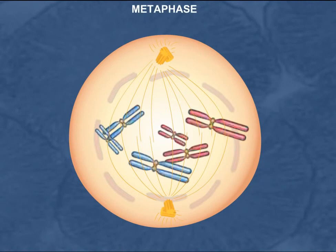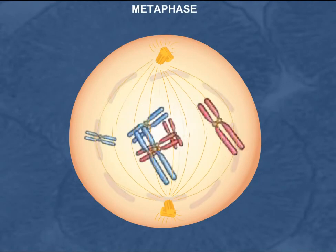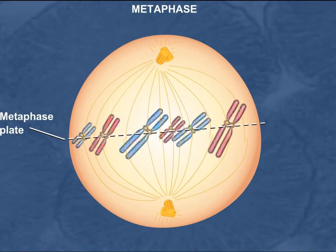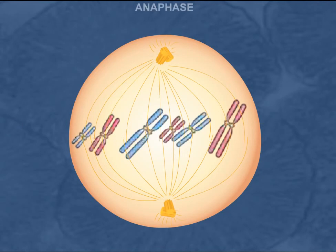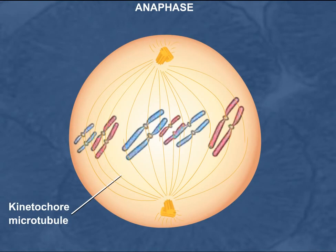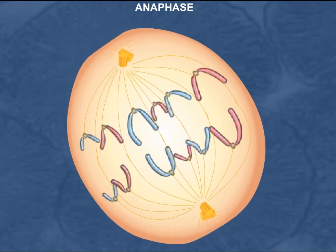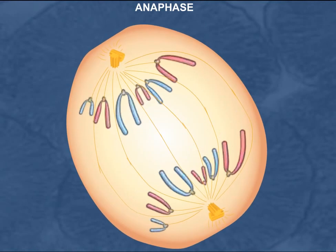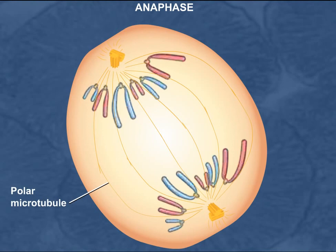During metaphase, the sister chromatids become localized in a region called the metaphase plate. Once the chromosomes have aligned at the metaphase plate, metaphase is complete and anaphase begins. The sister chromatids separate and each chromatid is now linked to only one pole via a kinetochore microtubule. The kinetochore microtubules shorten and the individual chromatids, now called chromosomes, are drawn to the poles. Toward the end of anaphase, the polar microtubules push against each other and cause the two poles to move farther apart.